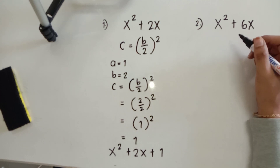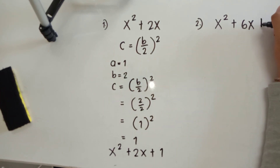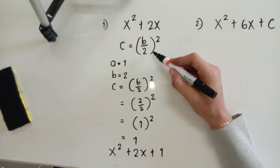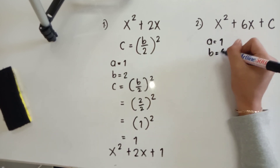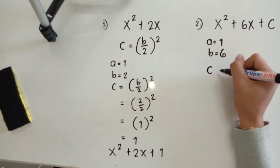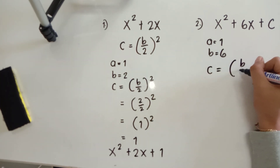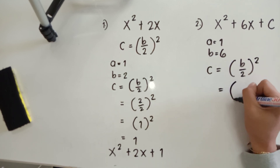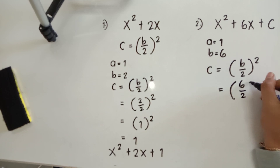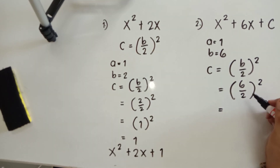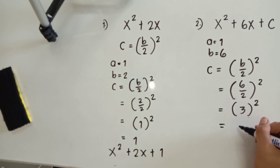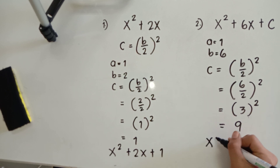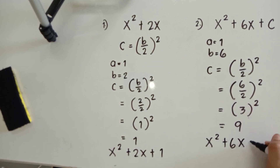Next, we have to complete the given example x squared plus 6x plus c. Again, we have to use the formula. Your a is equal to 1, and your b is equal to positive 6. In order to find c, that is equal to b over 2 to the power of 2. Substituting the value of b: 6 over 2 to the power of 2. Simplifying inside the parenthesis gives 3 to the power of 2. The square of 3 is equal to 9. Therefore, our perfect square trinomial is x squared plus 6x plus 9.